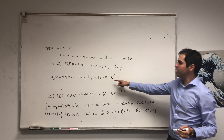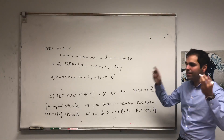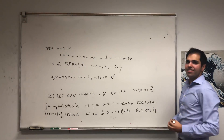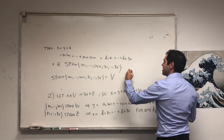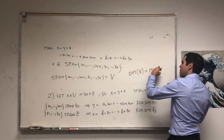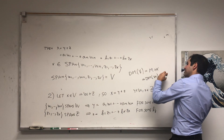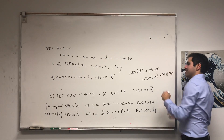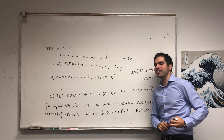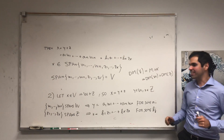Therefore this set is linearly independent and spans V, so we have a basis for V. In particular, this shows that dim(V) = m + k, which is dim(W) + dim(Z). In general this is not true if V is just a sum of two subspaces, but it is true if you have a direct sum.